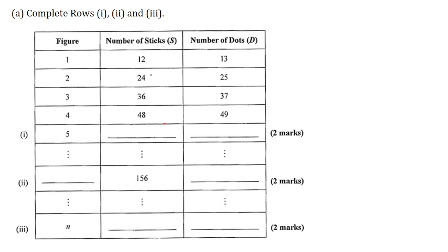Now the first thing I will do here is to check and see if there is a common difference. So 24 minus 12 here is 12. 36 minus 24 is 12. 48 minus 36 is 12. So you can see clearly that there is a common difference. So this is an arithmetic sequence. 48 plus 12 is equal to 60.